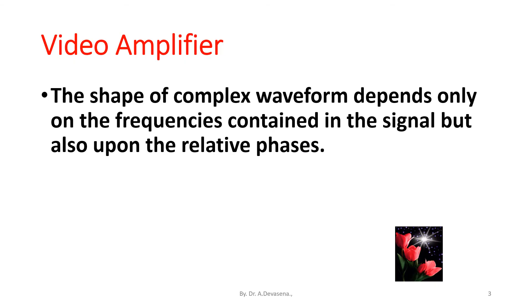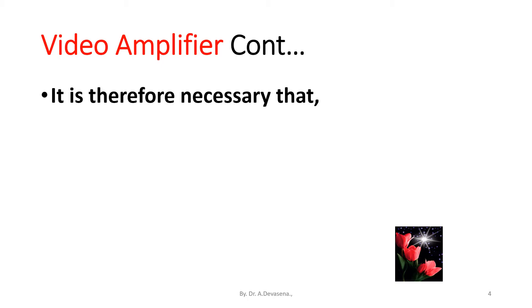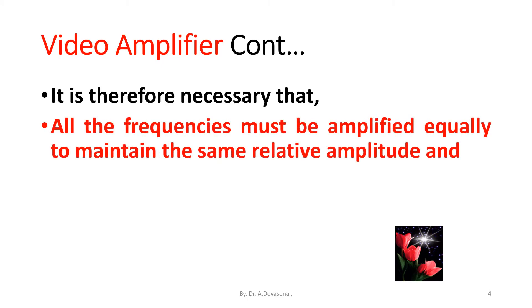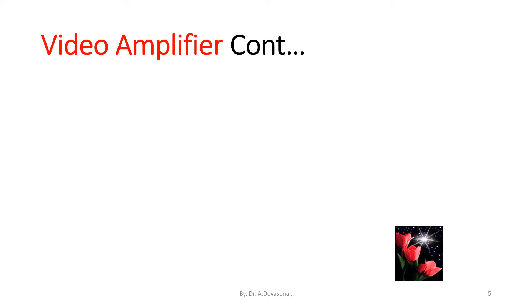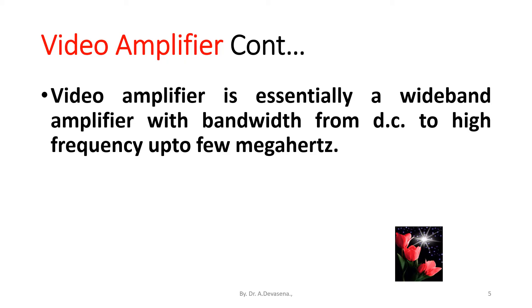The shape of the complex waveform depends not only on the frequencies contained in the signal but also upon the relative phases. It is therefore necessary that all the frequencies must be amplified equally to maintain the same relative amplitude, and the relative phases of all the frequency components in the output must be the same as the input. Video amplifier is essentially a wide band amplifier with bandwidth from DC to high frequency up to a few megahertz.